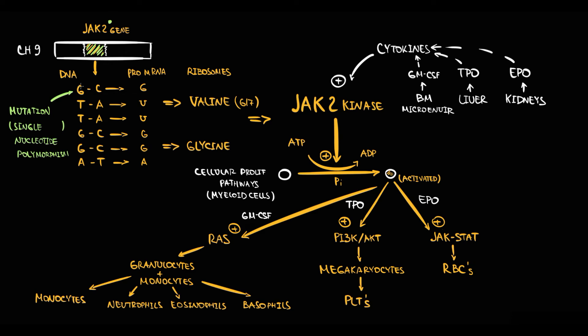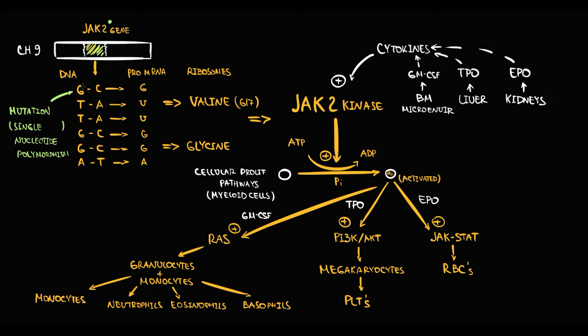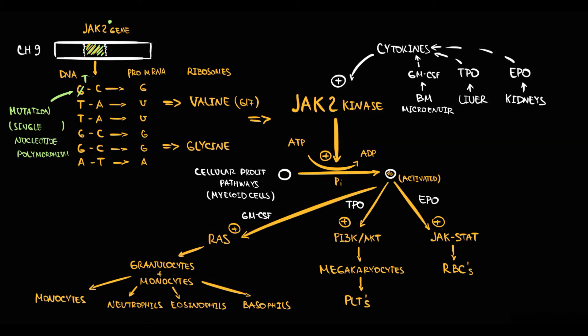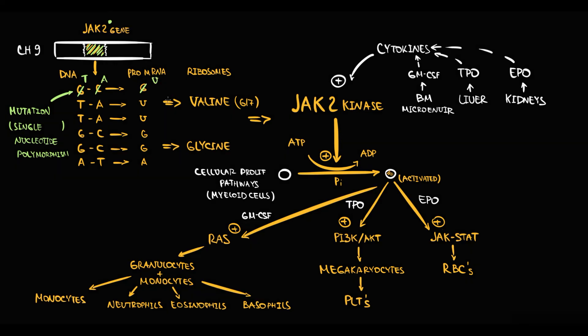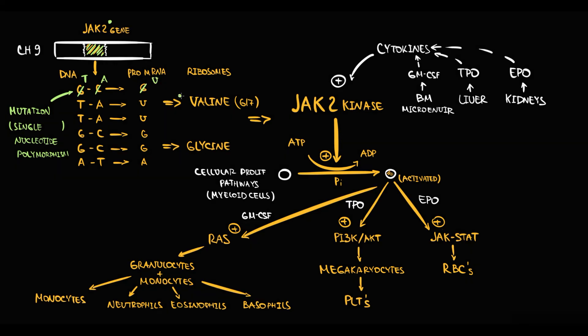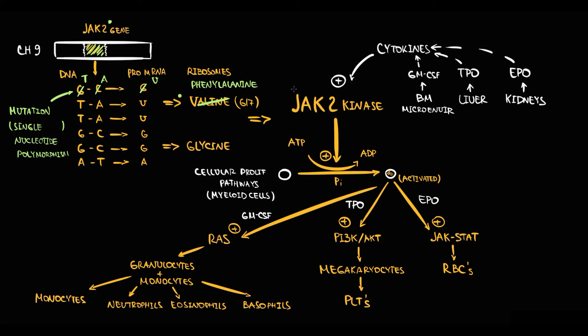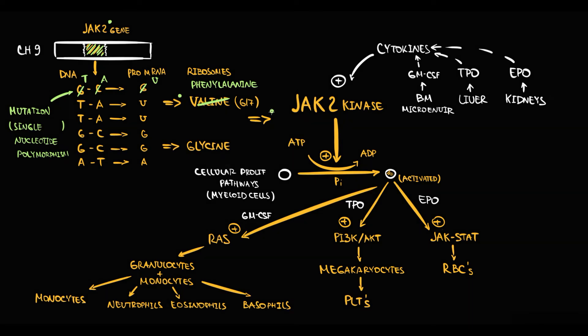In DNA molecule, due to a single nucleotide polymorphism, guanine is substituted by thymine. Thereby in non-coding strand will be adenine, in mRNA molecule will be uracil. Now the triplet UUU encodes not valine but phenylalanine, which is totally different amino acid. So mutation in DNA molecule results in production of JAK2 kinase that has phenylalanine in 617 position.